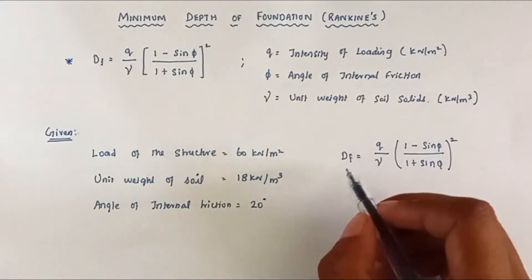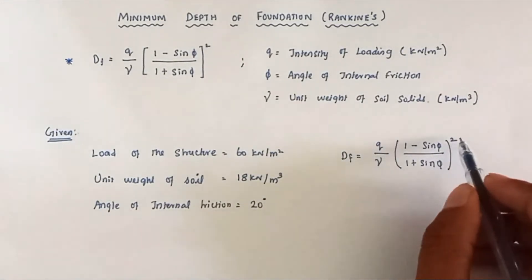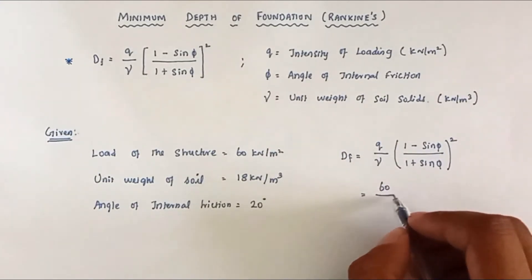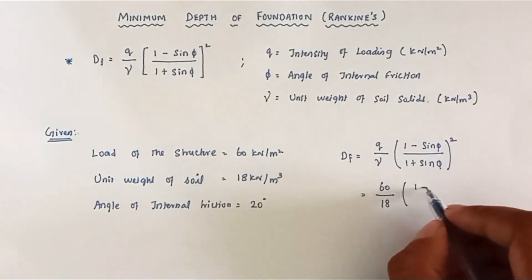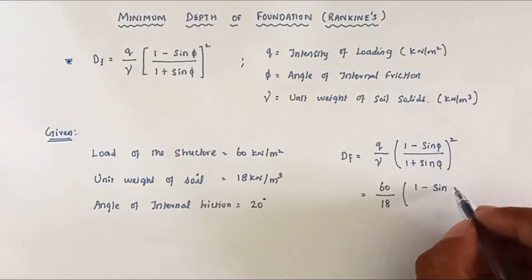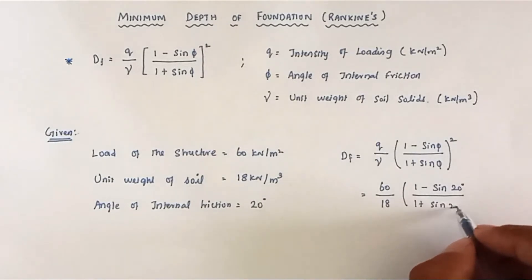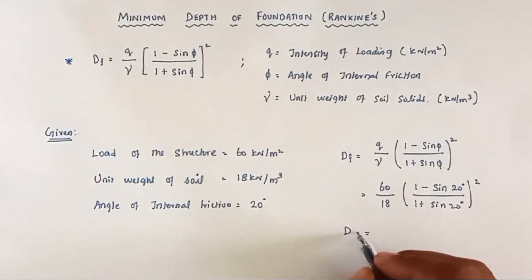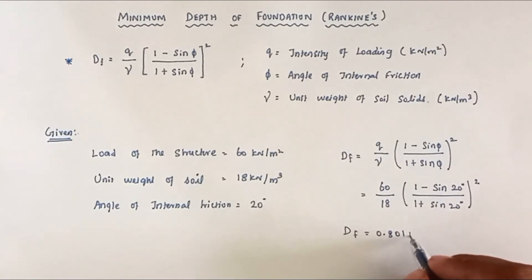Now we apply the formula: df = (q / γ) × ((1 − sin φ) / (1 + sin φ))². Substituting the values: df = (60 kN/m²) / (18 kN/m³) × ((1 − sin 20°) / (1 + sin 20°))². Solving this, df = 0.801 meters.